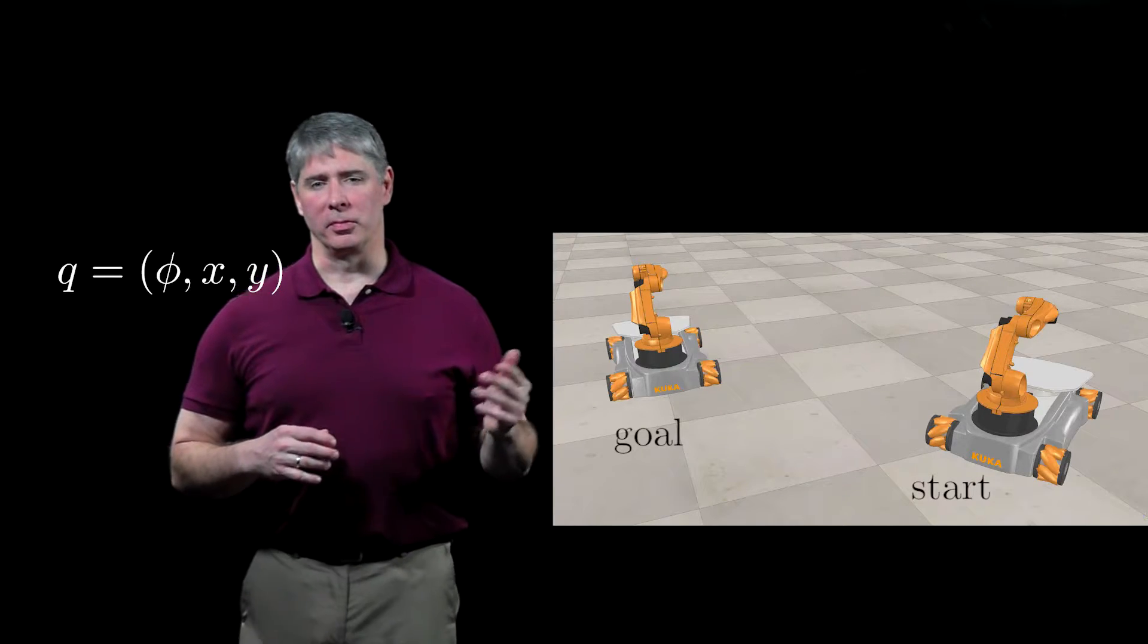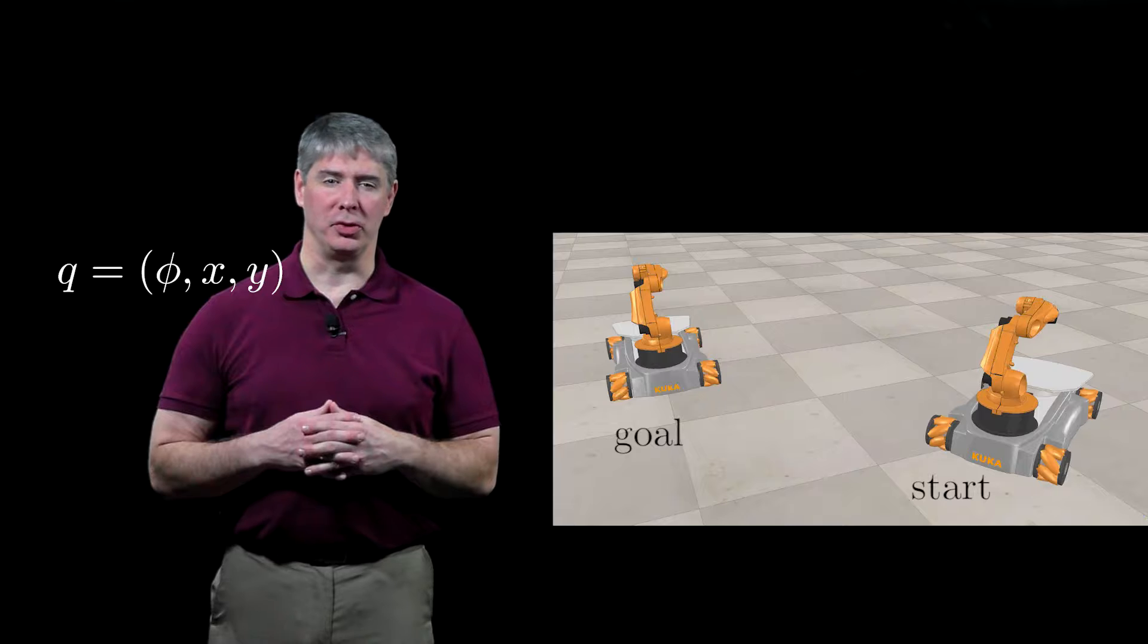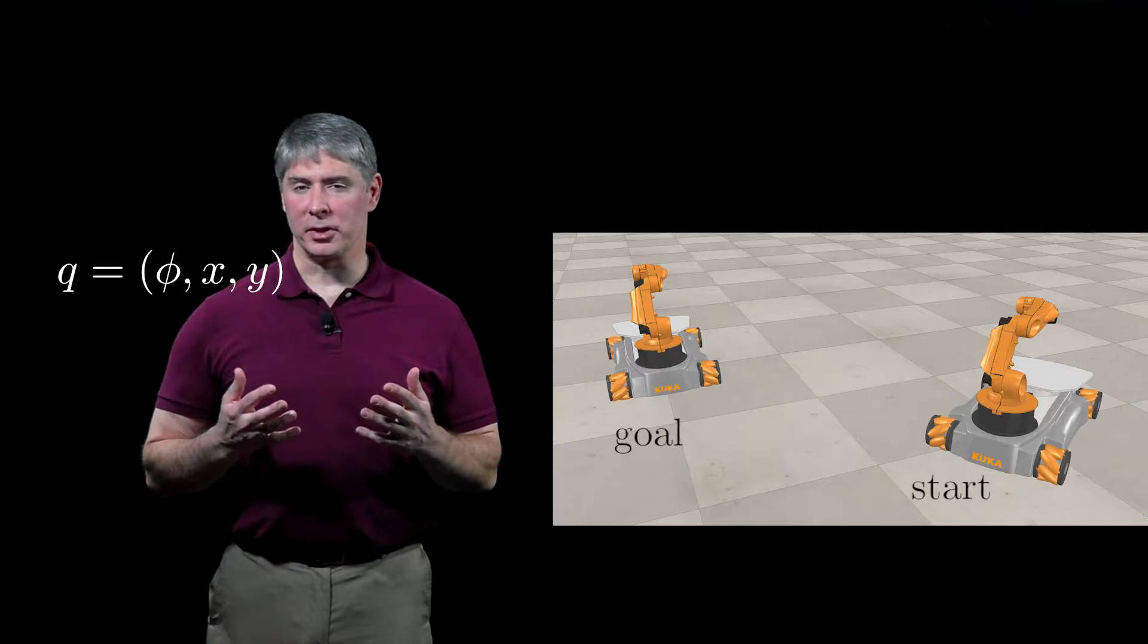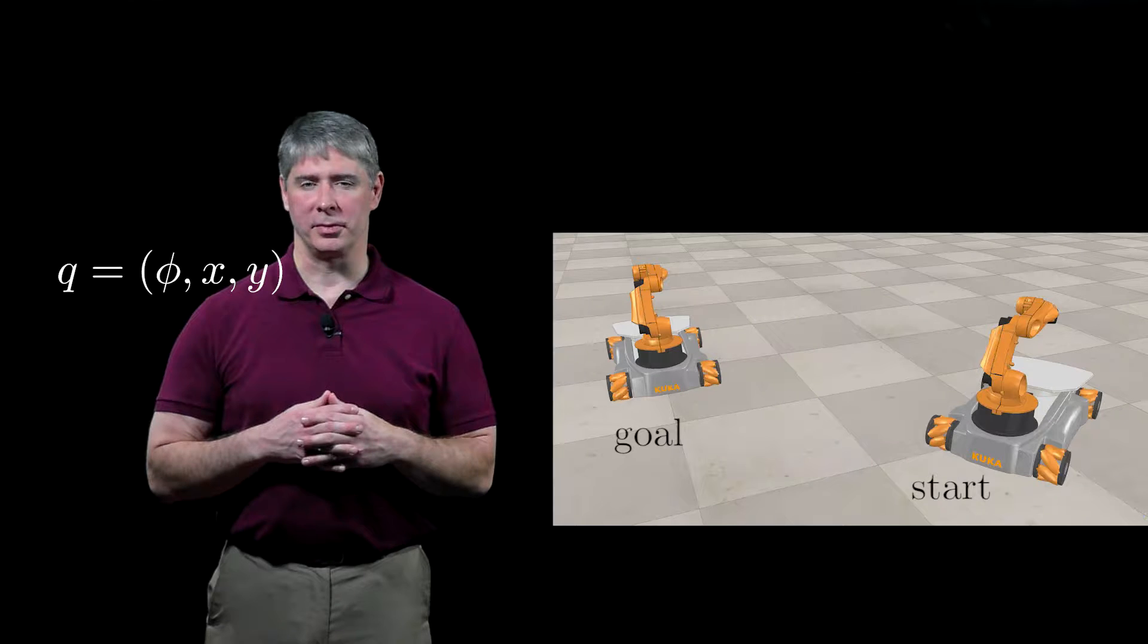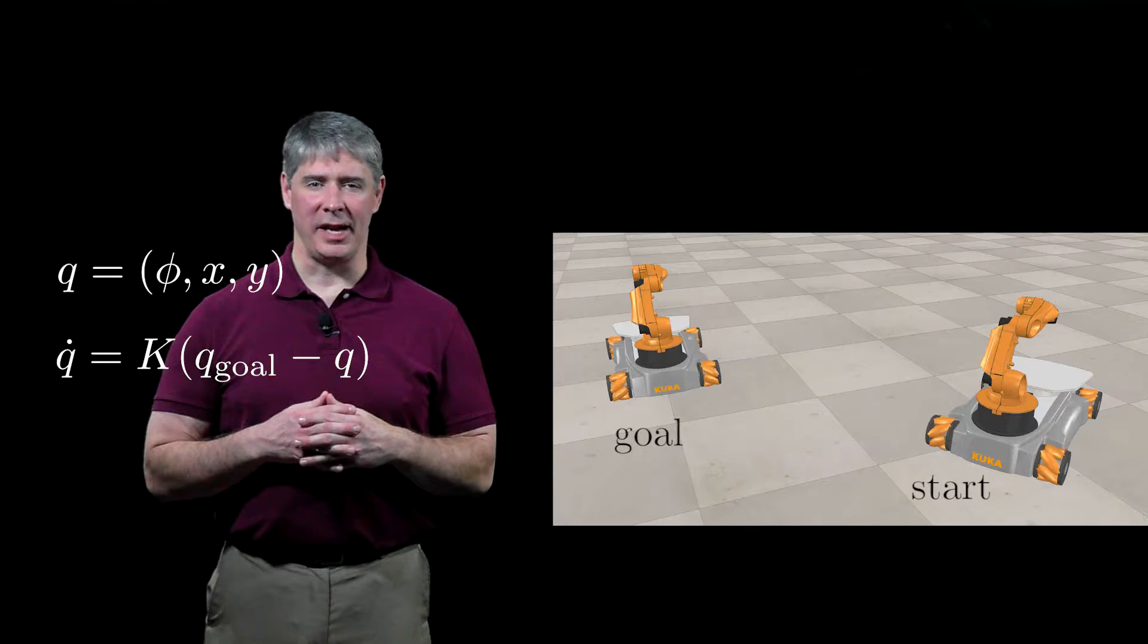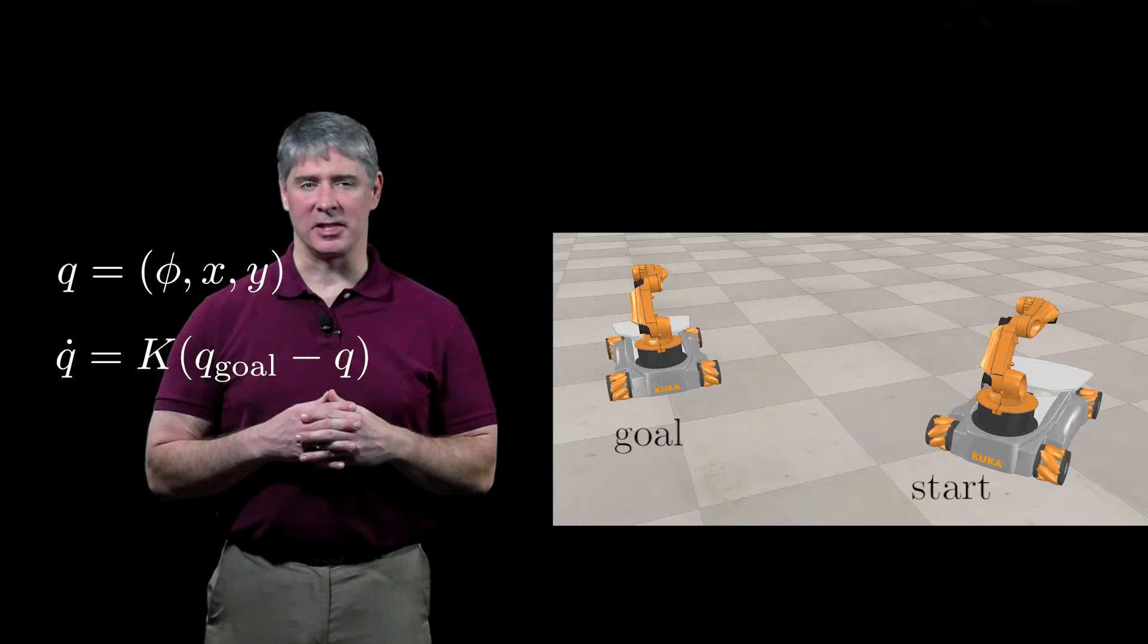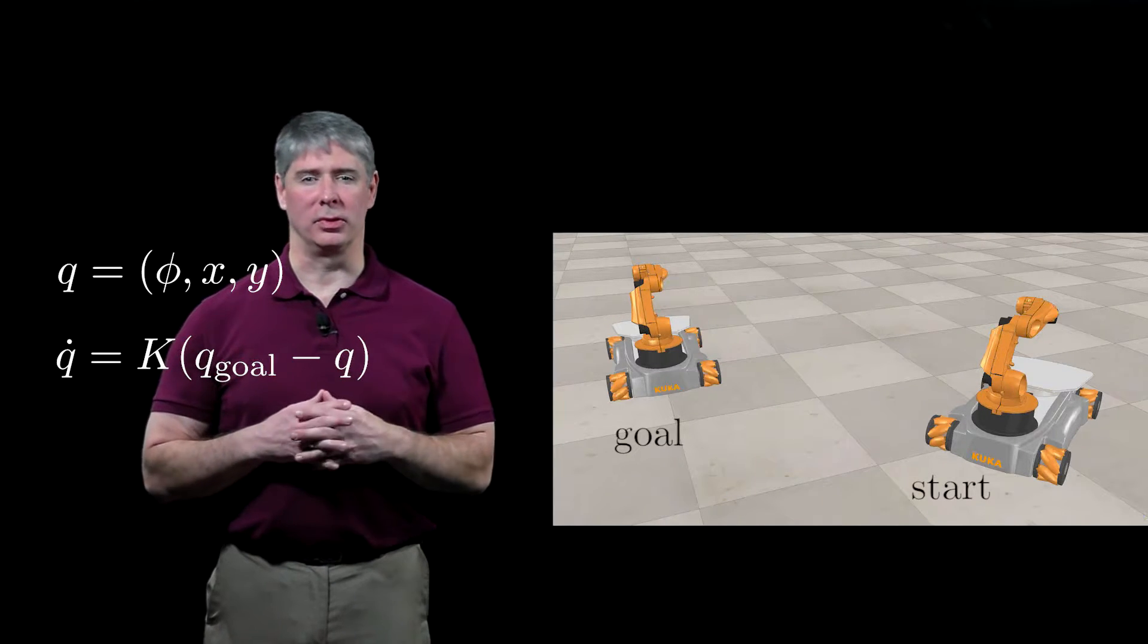Consider an omnidirectional wheeled mobile robot with a goal configuration Q-goal. A simple controller to drive the robot to the goal configuration is the proportional controller Q dot equals K times Q-goal minus Q, where the feedback gain matrix K acts like a spring to pull Q to Q-goal.